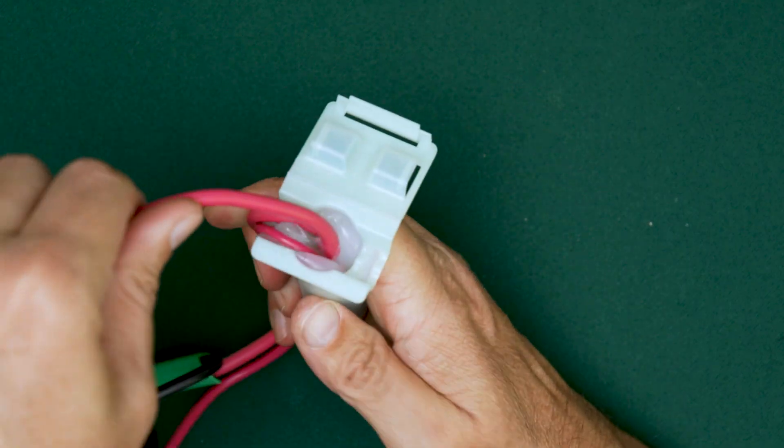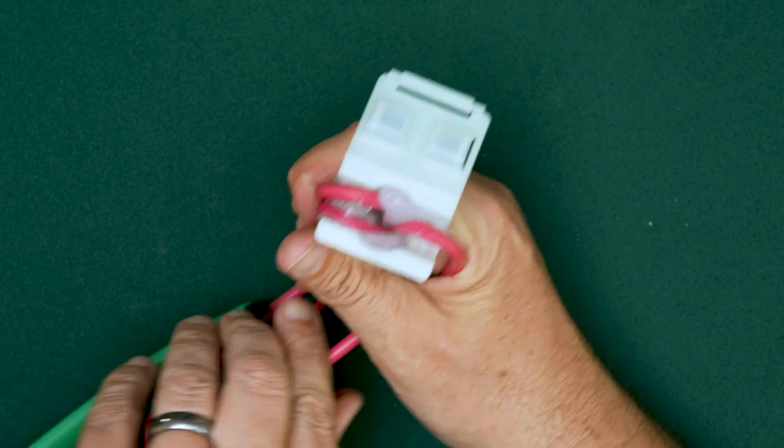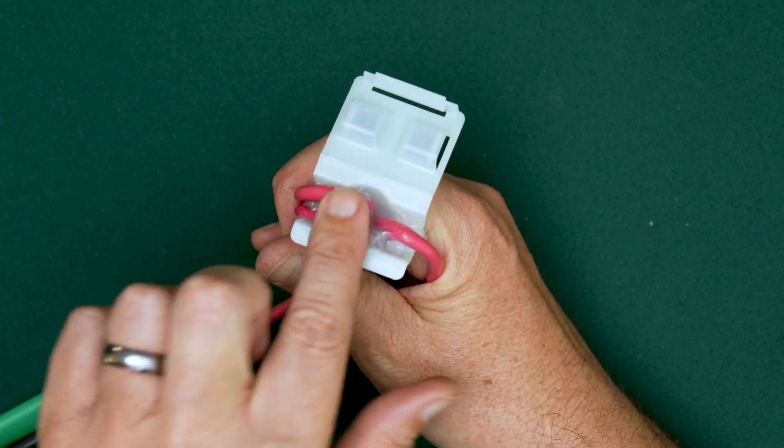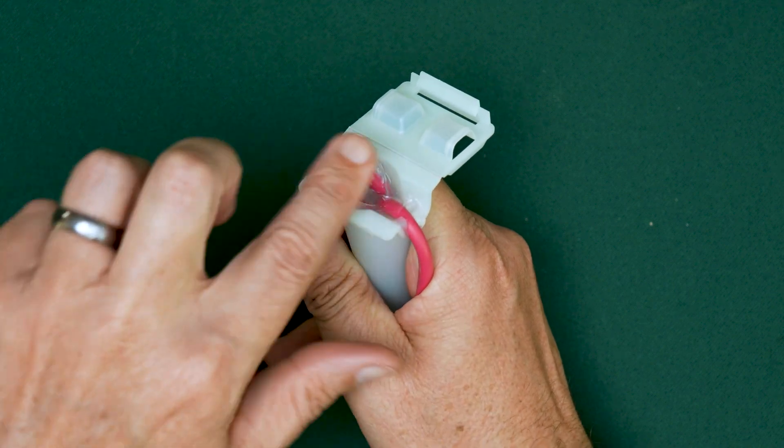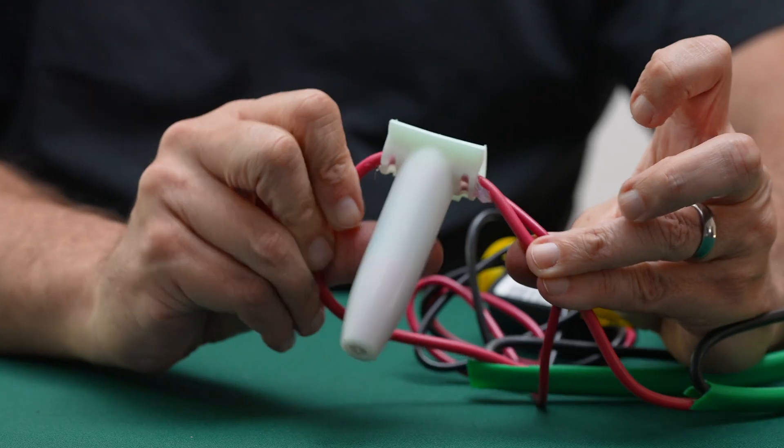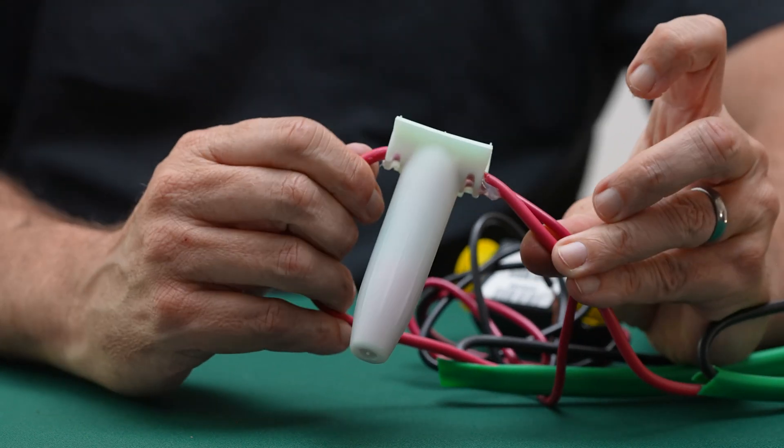Bend the wires to either side of the connector. Use a fingertip to smear the dielectric gel around the entry point and between the wires, making sure there are no gaps or voids. Close the strain relief until it clicks and tug on each wire to ensure it's locked in.